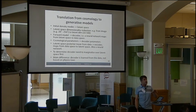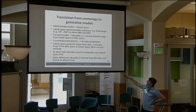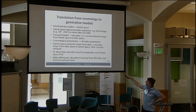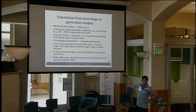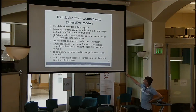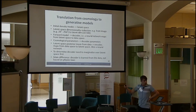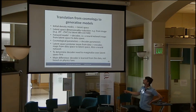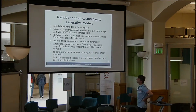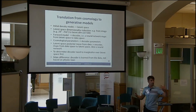I want to translate what we learned in cosmology to more general machine learning. Initial density modes in cosmology correspond to the latent space. We can talk about latent space dimensionality reduction. The forward model becomes a decoder or generator. Cosmological parameters become the parameters of the decoder. And the posterior reconstruction I was showing is really an encoder — going from the data back to the latent space. We also need to marginalize over the latent space to get the decoder parameters. The main difference is that in machine learning, we don't have a physics-based forward model — we try to learn it from the data.